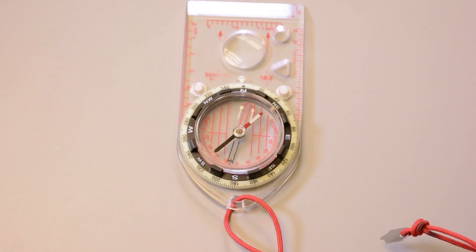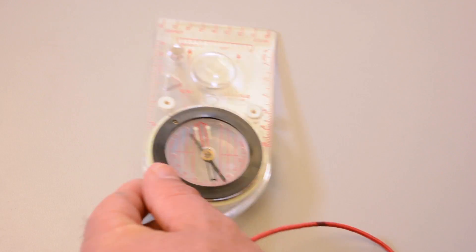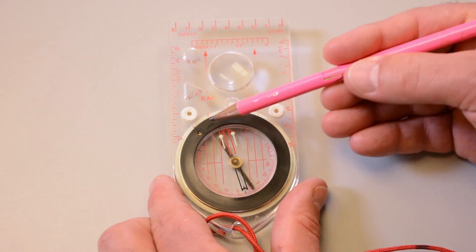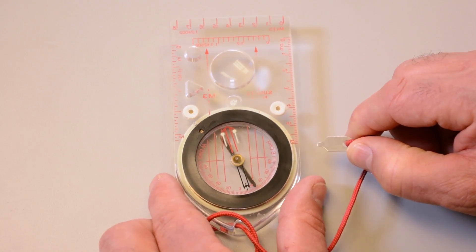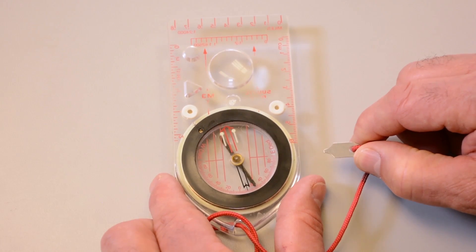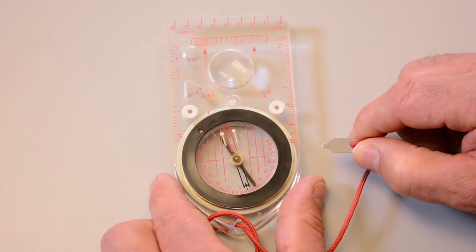The Suunto M3 also has adjustable declination, which I consider a mandatory feature. With adjustable declination, you adjust the orienteering arrow to match your local declination, and then measure all bearings to true north. To set your declination, turn your compass over and look for a tiny screw that's on the bottom of the base plate right here. This compass also comes with a small screwdriver that we use to turn the screw. We cover this procedure in detail in Lesson 10.